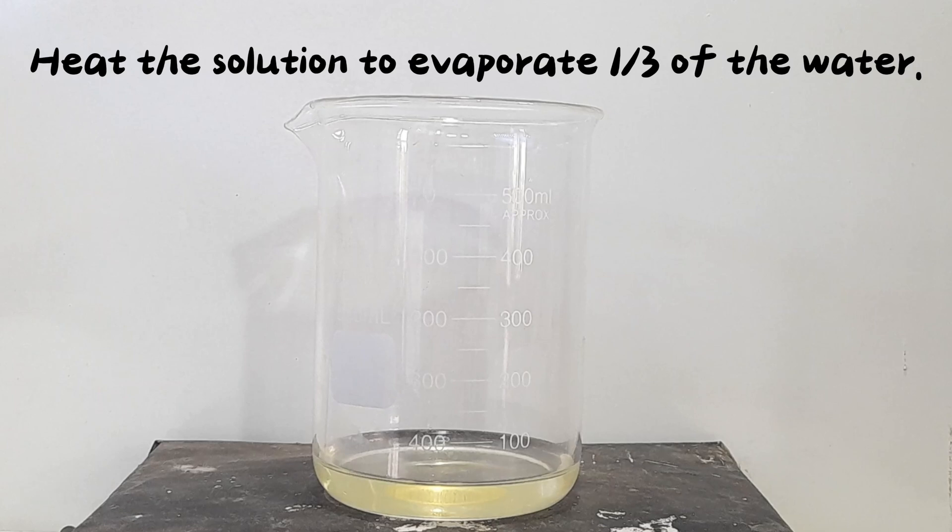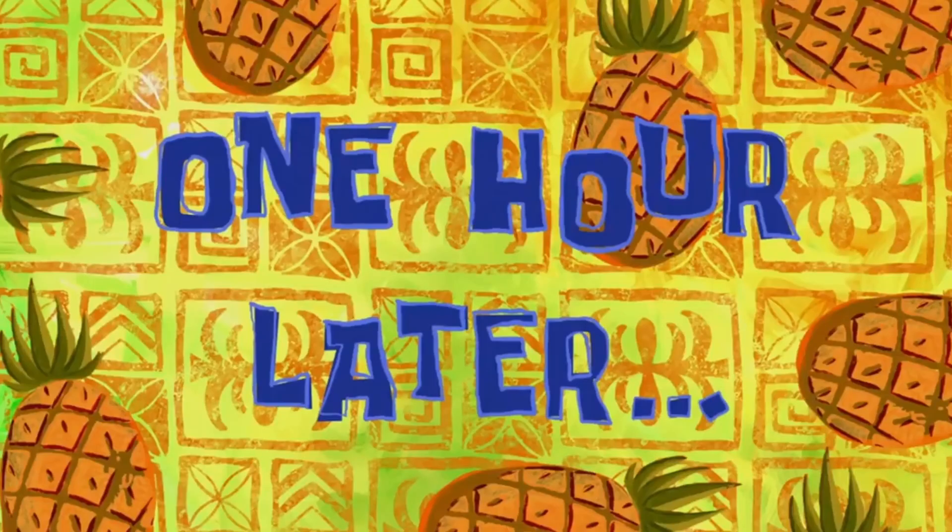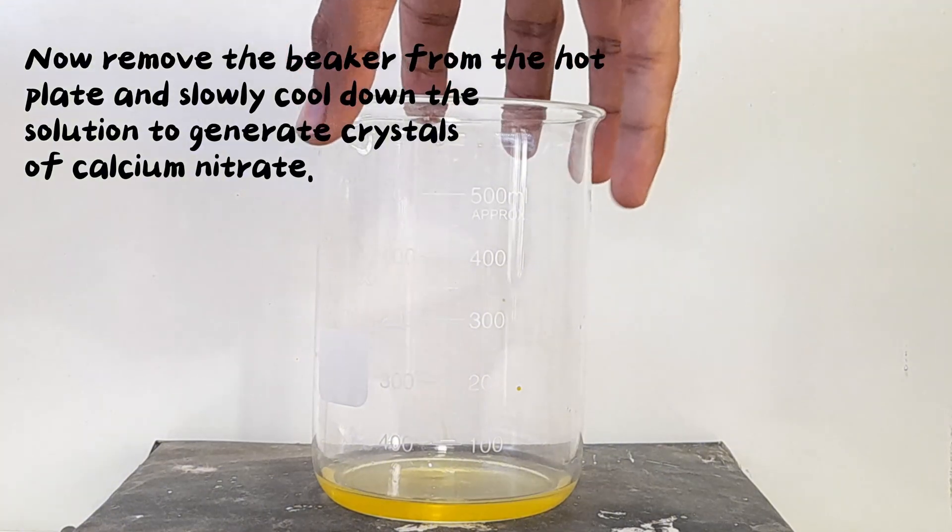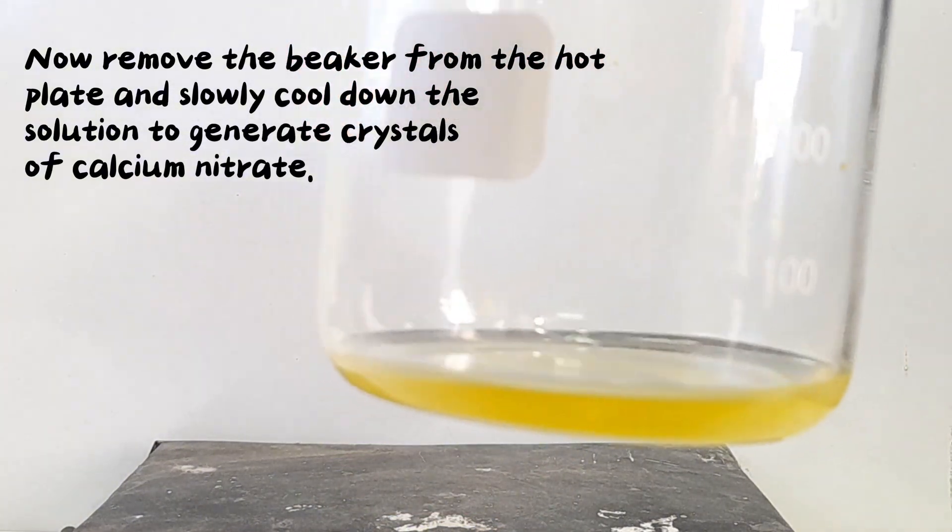Heat the solution to evaporate a third of the water. One hour later, now remove the beaker from the hot plate and slowly cool down the solution to generate crystals of calcium nitrate.